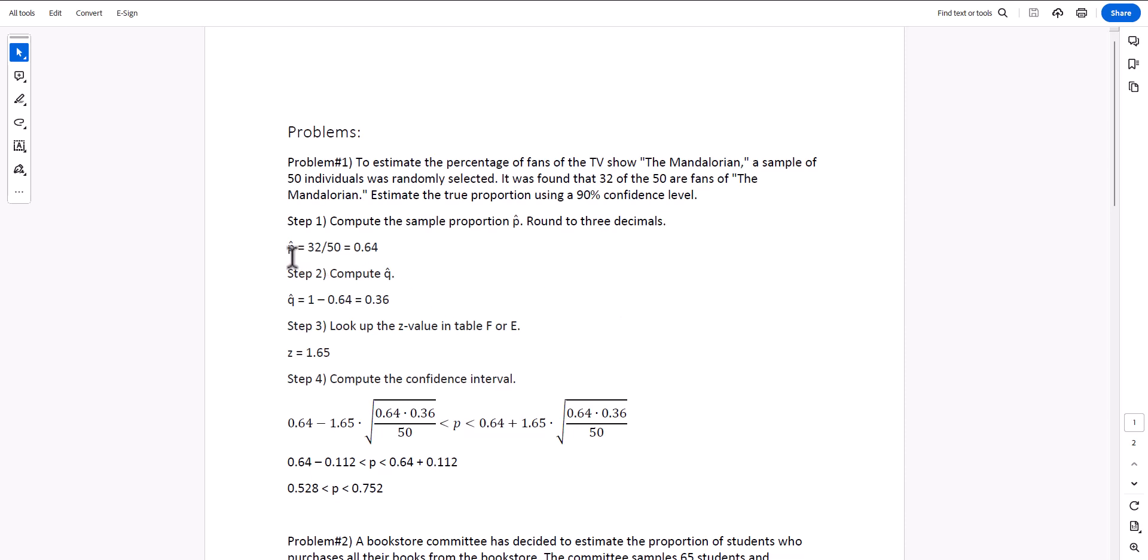Step 1 is to calculate the sample proportion called p-hat. That's 32 out of 50, which is 0.64. We also calculate q-hat, which is 1 minus p-hat, 1 minus 0.64, which equals 0.36.